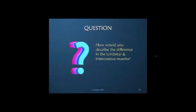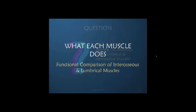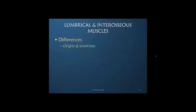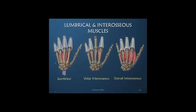Now if we bring all this together, how would we describe the difference in the lumbrical and the interosseous muscles? Let's look at this briefly. What would a functional comparison of these muscles look like? What about origins and insertions? Totally different. The lumbrical arises from extrinsic tendons, while the interosseous have long bony insertions within the hand.